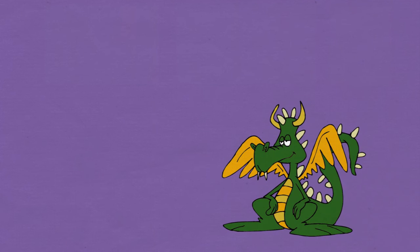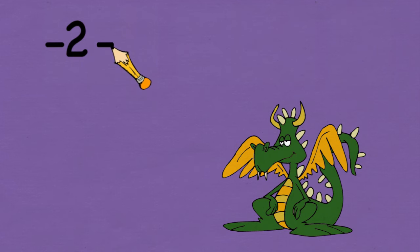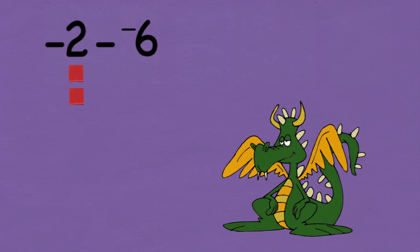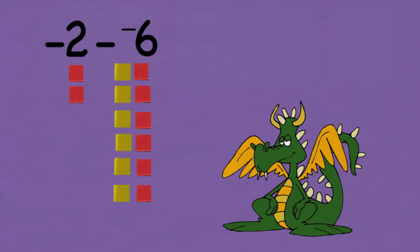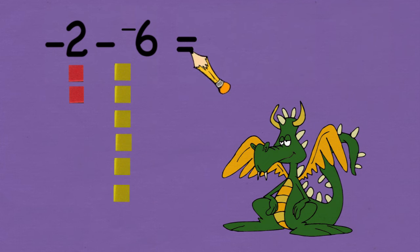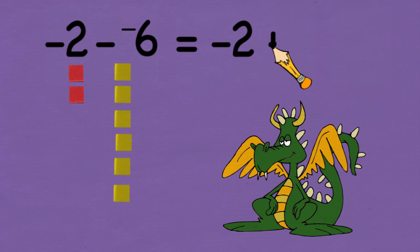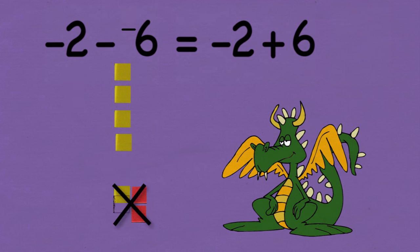Let's look at one last situation: negative 2 minus negative 6. I start by laying out two negative tiles. Since I don't have six negative tiles to remove, I'll need to add six zero pairs. After that, I'll remove the six negative tiles, and that would leave me with negative 2 plus 6. When I simplify that, I get 4.